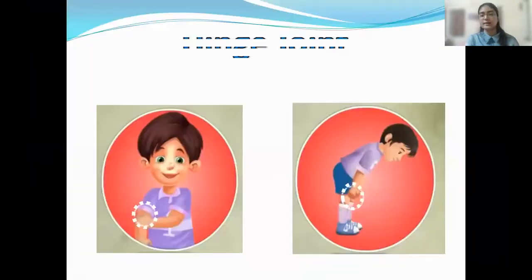The movement is allowed only back and forth. Back and forth. So, that is like a door. It will close and open, right? Close and open. Similarly, it is closing and opening. Closing and opening. And where do we find them? In our elbow joint and our knee joint. Perfect.